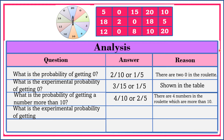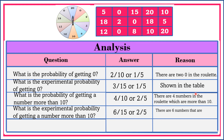What is the experimental probability of getting a number more than 10? Since the question is experimental probability, let's refer our answer to the table. Let's count how many numbers more than 10. We have 1, 2, 3, 4, 5, 6. Therefore, the experimental probability of getting a number more than 10 is 6 over 15. Reduced to its lowest term, the answer is 2 fifths. There are 6 numbers that are more than 10 out of 15 trials.